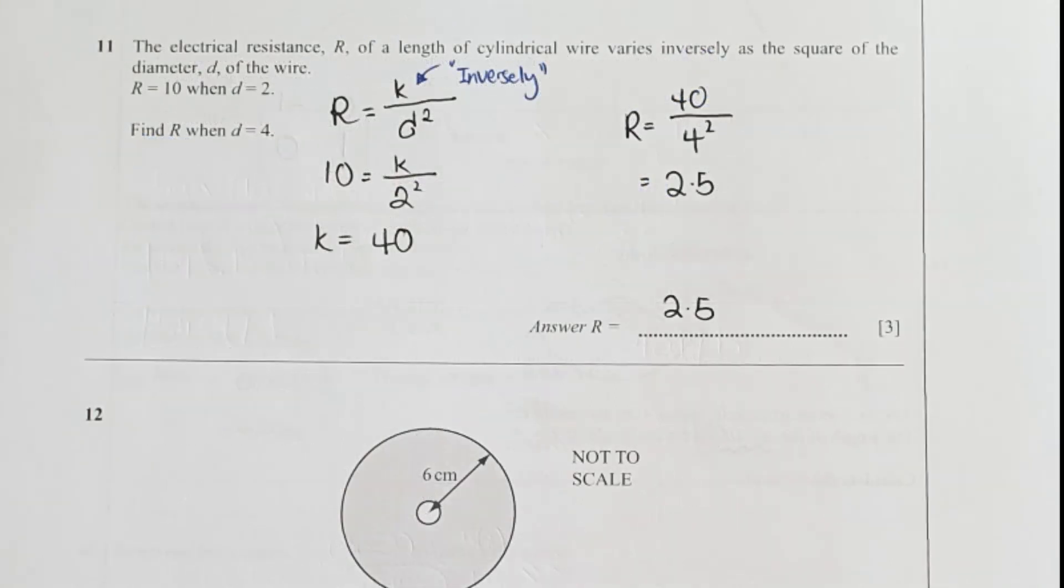Question 11, the keyword here is inverse. So r equals k over d squared. The k here is actually the scale factor that we are trying to identify. So k after the calculation is equivalent to 40. Then substitute your d equals 4 into it, then you get your final result as 2.5.